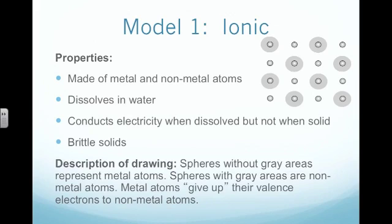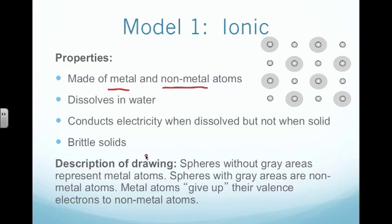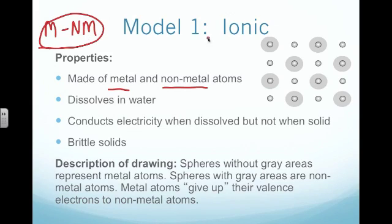In the Electron Glue activity, we were introduced to four major types of bond. The first one we looked at was ionic. Ionic bonds are made up of metals and nonmetal atoms. So anytime we see a metal combined with a nonmetal, we know that that is going to be an ionic compound. Ionic compounds tend to dissolve in water. They conduct electricity only when they're dissolved, not when they are solids. And they do tend to be brittle solids.